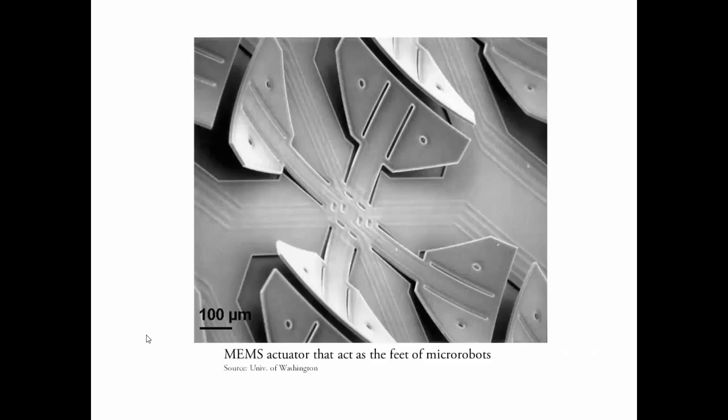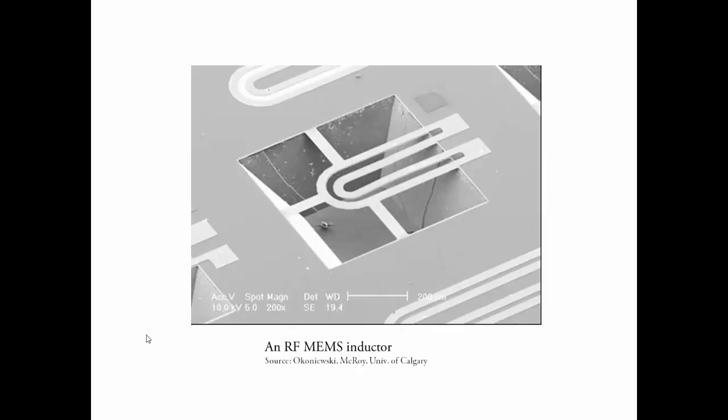This image shows an actuator developed in the University of Washington for use as a robotic micro leg similar in function to caterpillar legs. As you can see the structure is attached to the substrate only at the center. Everywhere else it is freely suspended. This is a typical kind of suspended structure often seen in MEMS sensors or micro heaters. The image is an RF inductor suspended over a cavity.